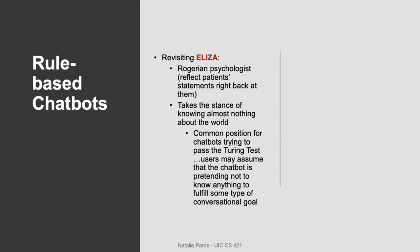ELIZA is a chatbot designed to function as a Rogerian psychologist. A Rogerian psychologist is basically one who repeats your problems back to you or asks general questions to prompt you to provide more information — they don't offer any novel or original insights. Because of this, it's relatively easy to create chatbots that function as Rogerian psychologists, since they can operate using a relatively small number of rules while still seeming natural.